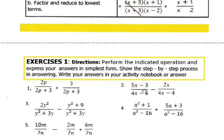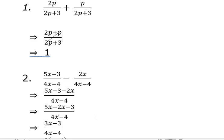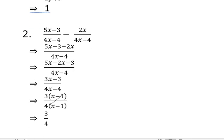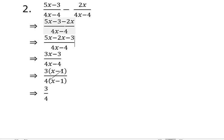Moving on to exercises number 2. We have here 5x minus 3 all over 4x minus 4 minus 2x all over 4x minus 4. For the solution, we have to transform them or rewrite them in such a way that they are together. Copy the common or the similar denominator 4x minus 4. We have to copy 5x minus 3 then minus 2x. We have to collect or combine like terms 5x minus 2x minus 3 all over the denominator 4x minus 4. Then, 5x minus 2x is 3x. Copy minus 3. Copy the denominator.